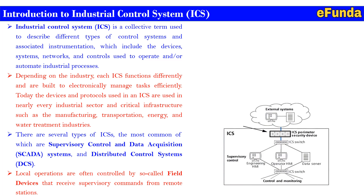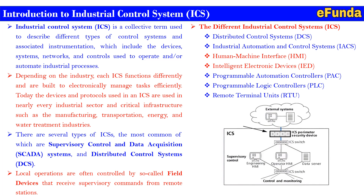Local operations are often controlled by so-called field devices that receive supervisory commands from remote stations. The different types of industrial control systems are Distributed Control System, Industrial Automation and Control System (IACS), Human Machine Interface (HMI), Intelligent Electronic Devices (IED), Programmable Automatic Controller (PAC), Programmable Logic Controller (PLC), and Remote Terminal Unit (RTU), among various others.